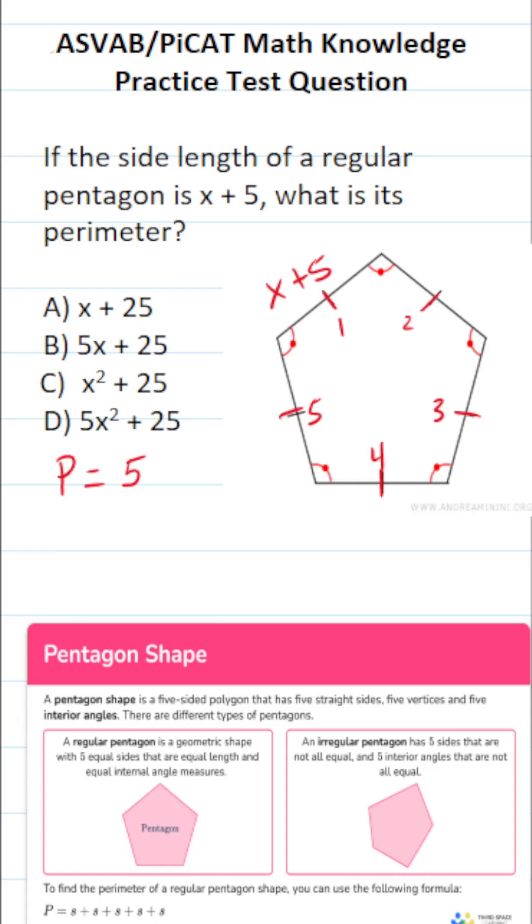So we're going to do five. Again, there are five equal sides in this regular pentagon times one of its sides, notably X plus 5. So we're going to take this five and distribute it here and here. This becomes 5X plus 25.